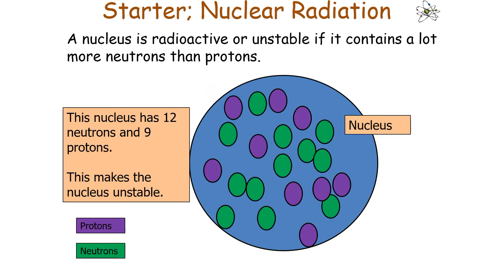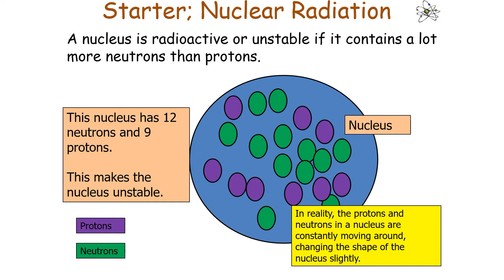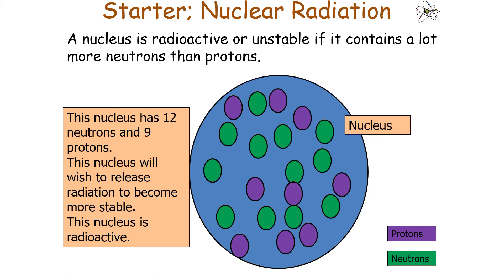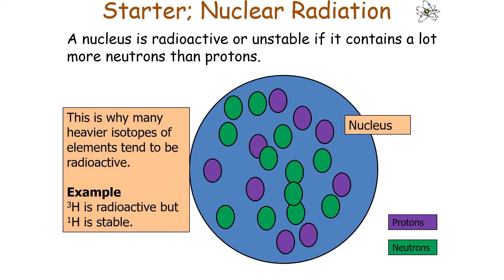A nucleus is radioactive or unstable if it contains a lot more neutrons than it does protons. In this image, there are 12 neutrons in the nucleus and 9 protons — so it has more neutrons than protons, making the nucleus unstable. In reality, the protons and neutrons in a nucleus are constantly moving around, churning and turning, changing the shape of the nucleus slightly. As there are more neutrons than protons, the nucleus is unstable, so it wishes to release radiation to become stable. We say this nucleus is radioactive — that's why many heavier isotopes of elements tend to be radioactive.